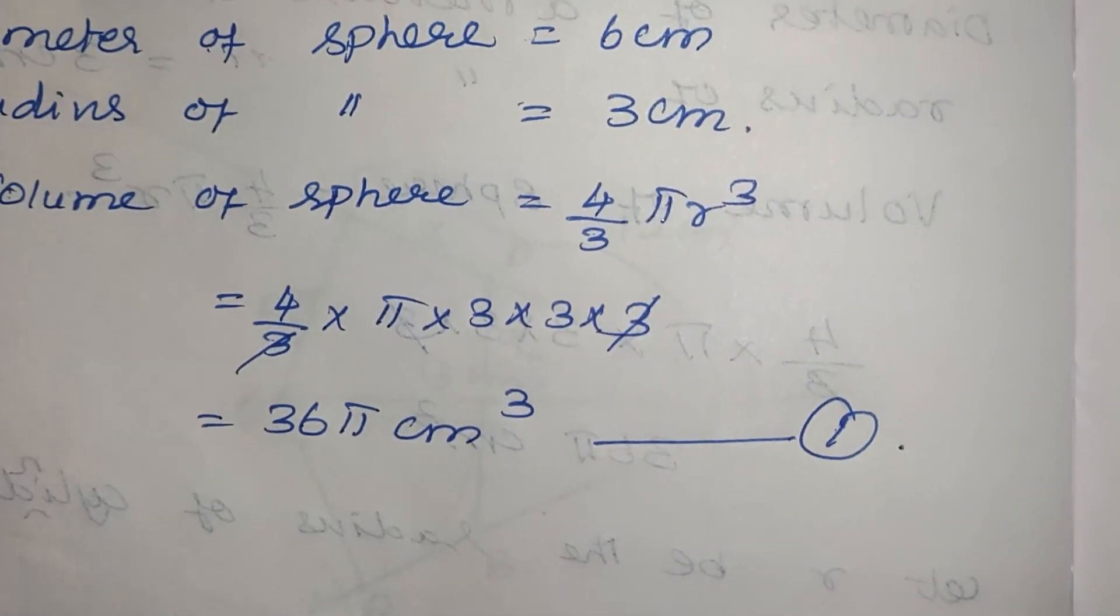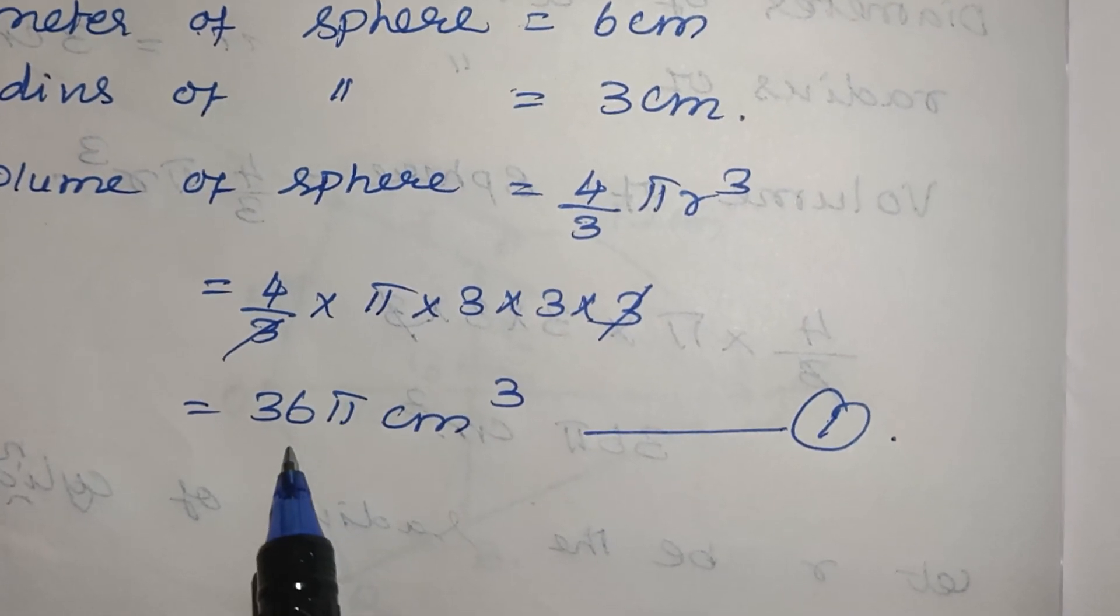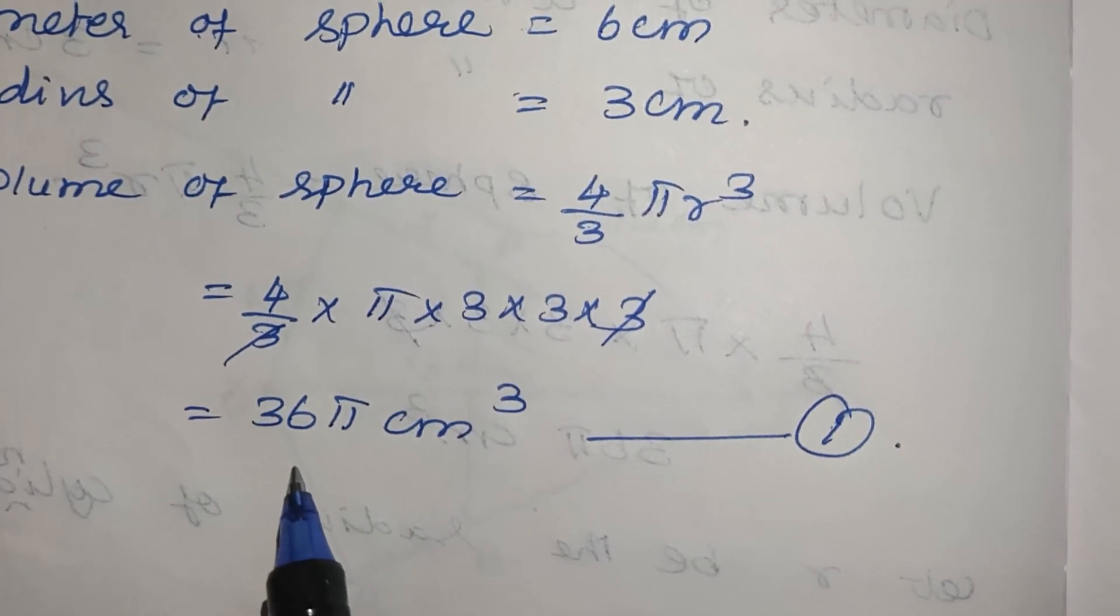If the sphere is melted, the metallic sphere is melted and drawn into a wire of uniform cross section. So, it is a cylinder.